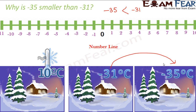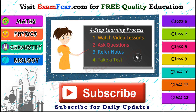When you place numbers on a number line, the only thing you need to remember is: as you move towards the right, you move towards a bigger number. So whenever you are comparing a positive number and a negative number, the positive number would be greater. If you are comparing two negative numbers or two positive numbers, just follow this rule — going towards right means a bigger number. Please visit examfear.com for free quality education, where you can watch video lessons, ask questions, refer to notes, and take free online tests. We have content for class 6 to 12 on physics, chemistry, mathematics, and biology, along with practical videos. Please subscribe to our channel for daily updates. Thank you.